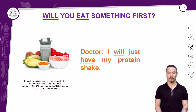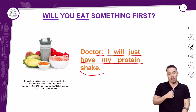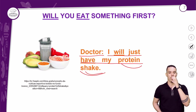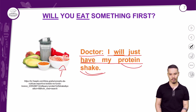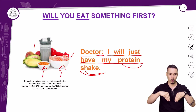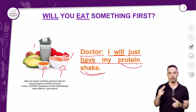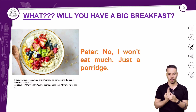Peter is asked: 'Will you eat something first?' and later 'What will you have — a big breakfast?' Peter replies: 'No, I won't eat much. Just a porridge' — with banana, kiwi, blueberry, framboesa, and other fruits. Notice the negative form uses 'won't.' Where is 'will' in the negative sentence? It's there — in contracted form: 'won't' equals 'will not.'